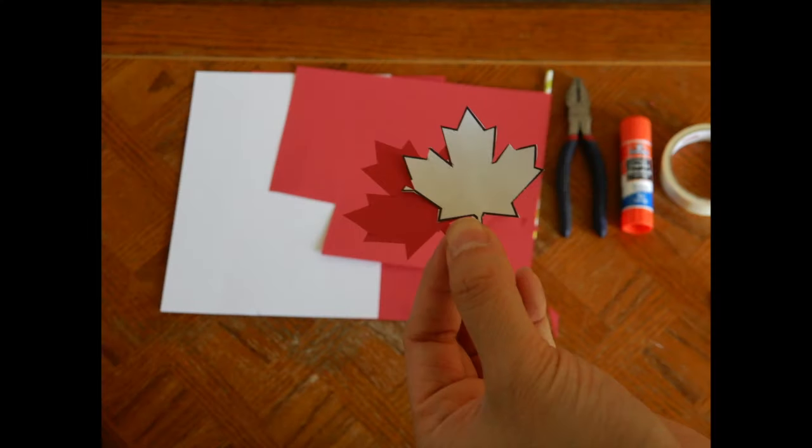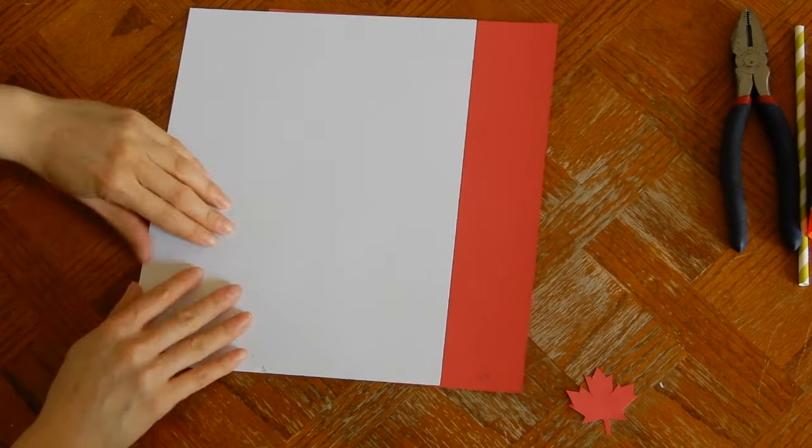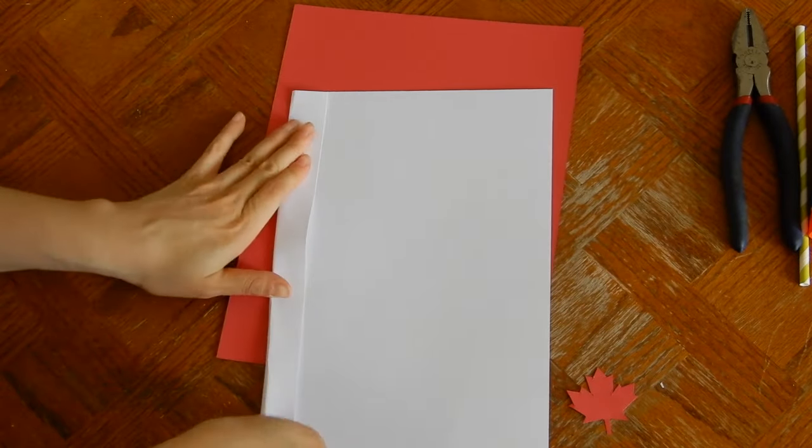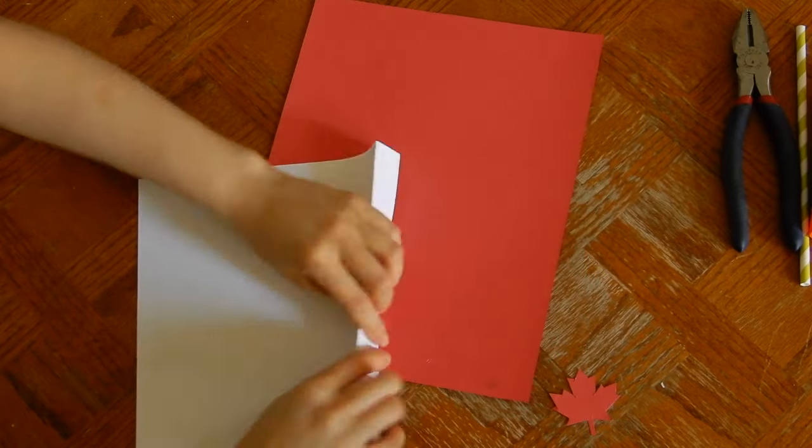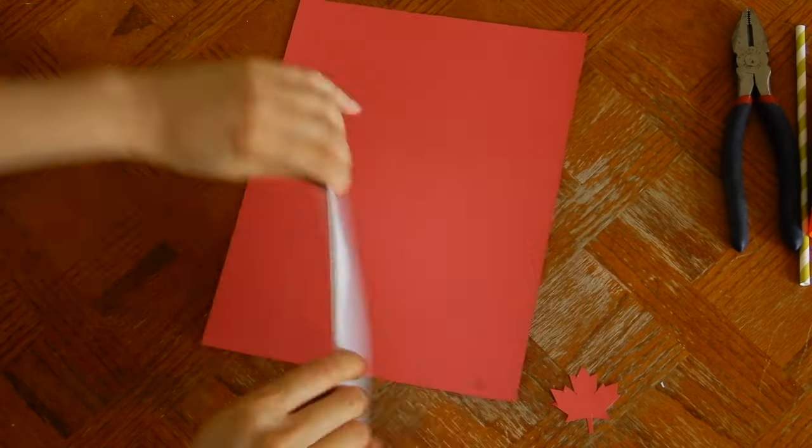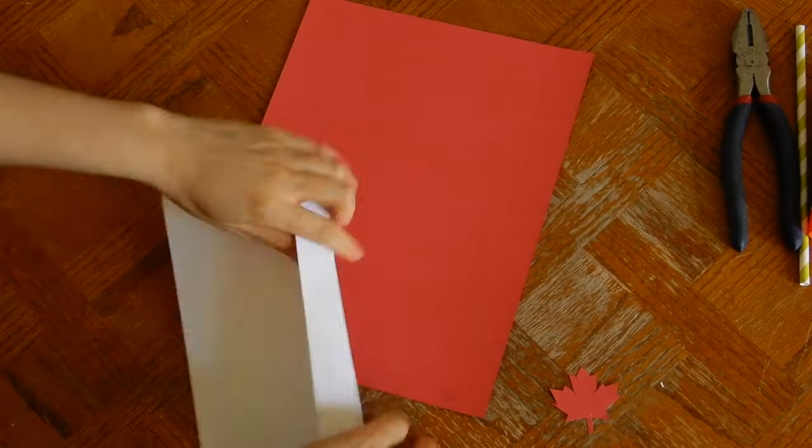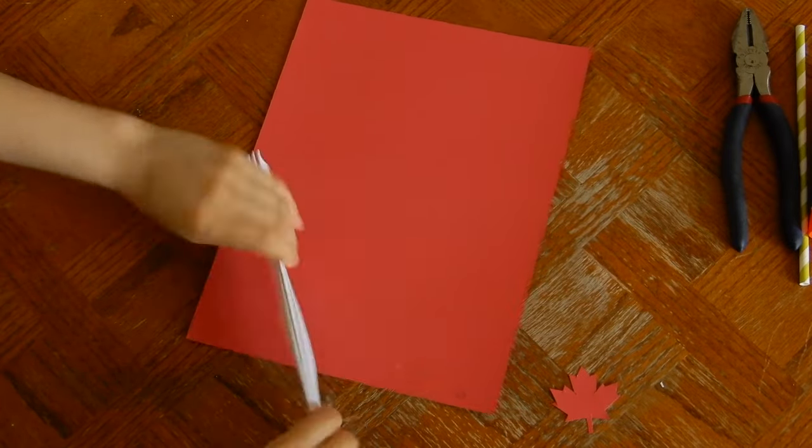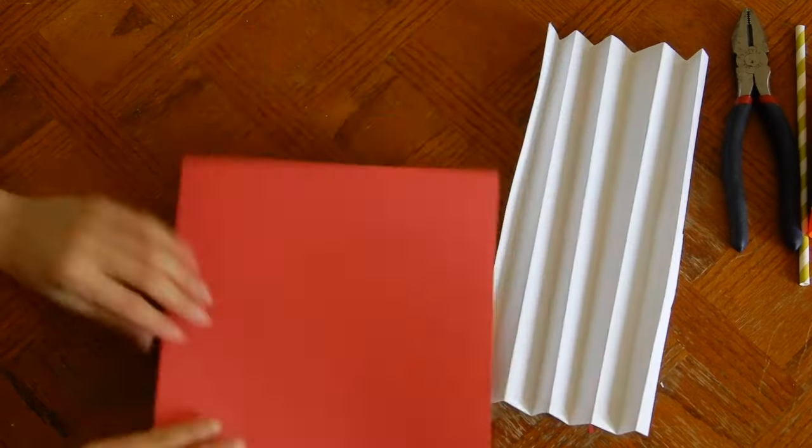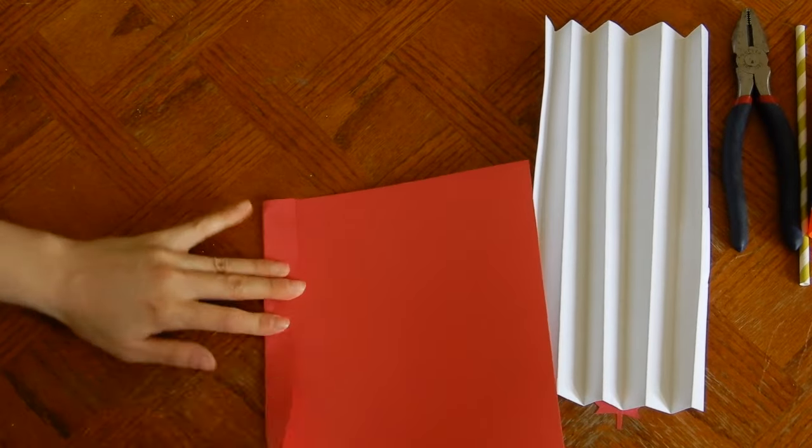Now that you have the template cutout in the red cardstock paper, you can start making the accordion. So it's an accordion fashion. You just have the folds in the same length back and forth for the two white cardstock paper and the two red cardstock paper.